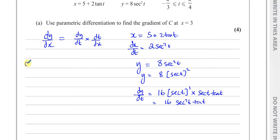So we can say now, that dy dx is going to be dy dt, which is 16 secant squared t times tan t, times 1 over dx dt. We want dt dx, which is going to be 1 over 2 secant squared t. So it's like multiplying by 1 over that, it's like dividing by that, so you're going to have over 2 times secant squared t.